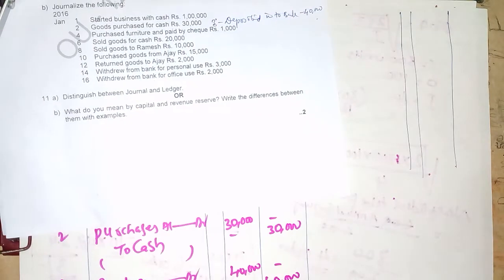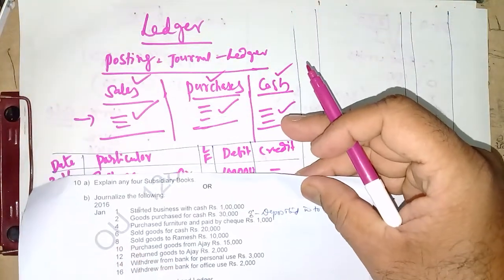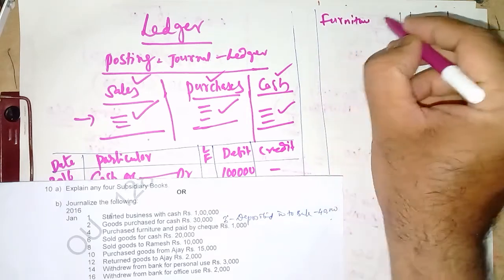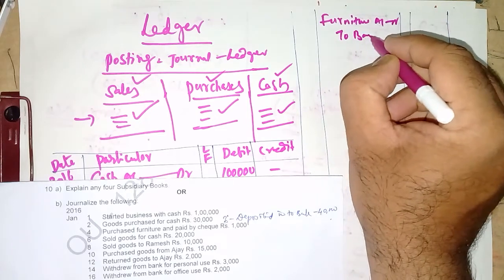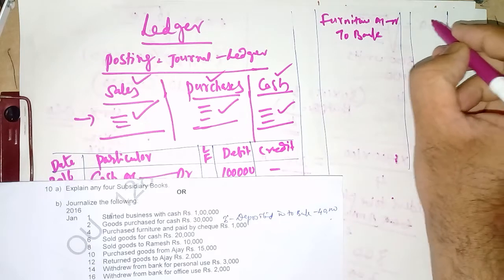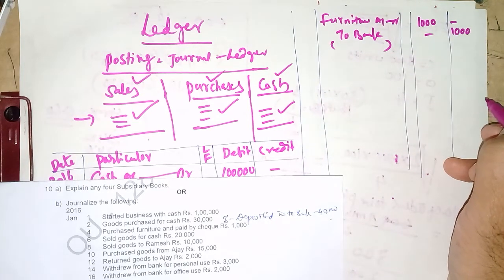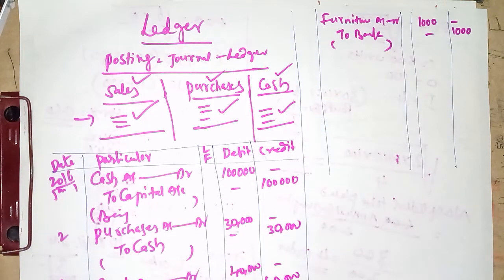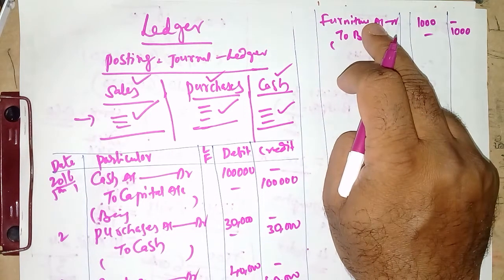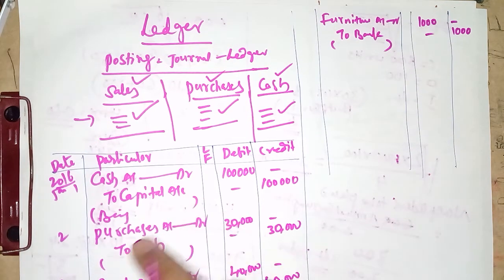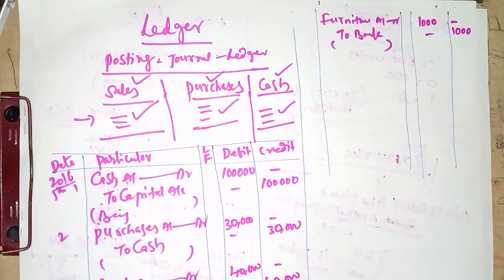Next transaction: purchase furniture and paid by cheque. The entry is: Furniture Account debit, to Bank Account. Goods are purchased for the purpose of resale and are recorded as purchases, whereas furniture is purchased for use in the business and becomes a fixed asset. That is the basic difference between purchases and furniture.